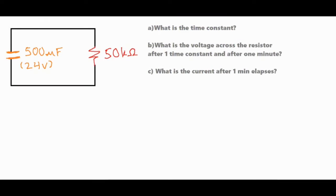In this video we're going to be taking a look at a 500 microfarad capacitor that is discharging through a 50 kilo ohm resistor and we're going to be solving for the time constant and using that time constant to find the voltage across the resistor after one time constant and after one minute and then also talk about two methods about how to solve for current after that one minute has elapsed.